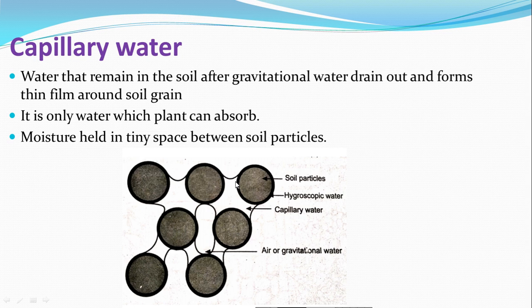You can see in the diagram that between the tiny particles of the soil, the water molecules which are held are known as capillary water. This capillary water can be absorbed by the plant.